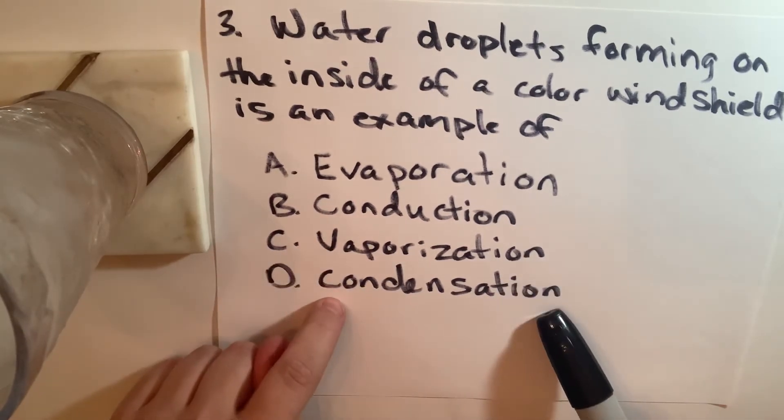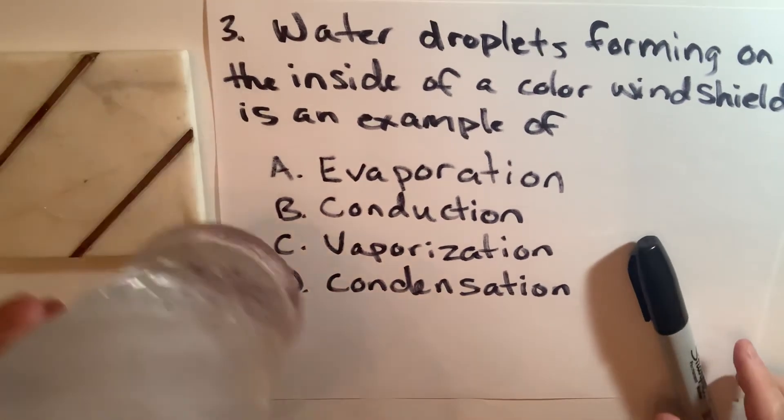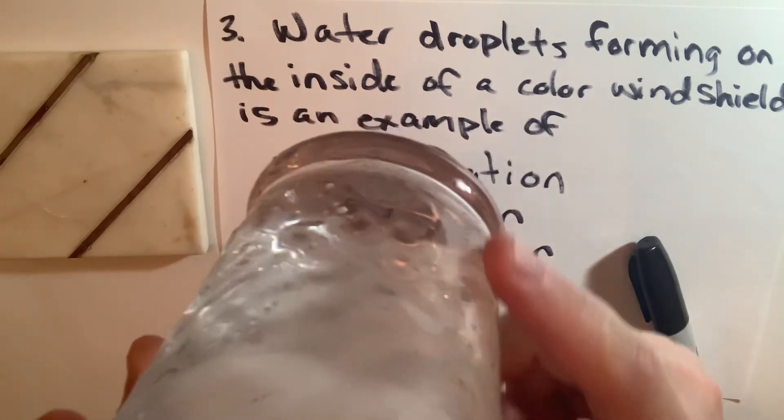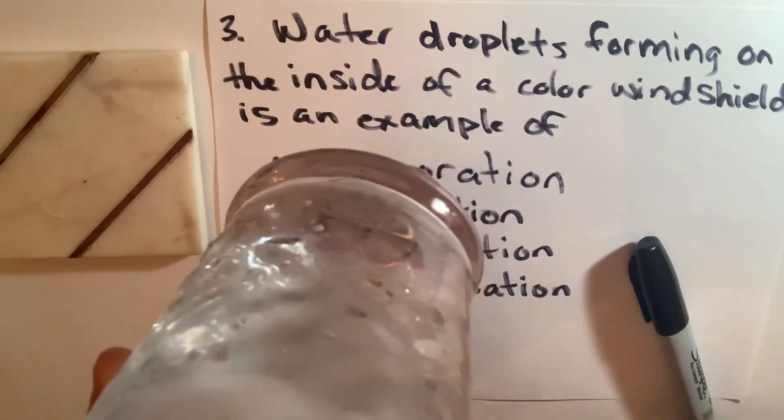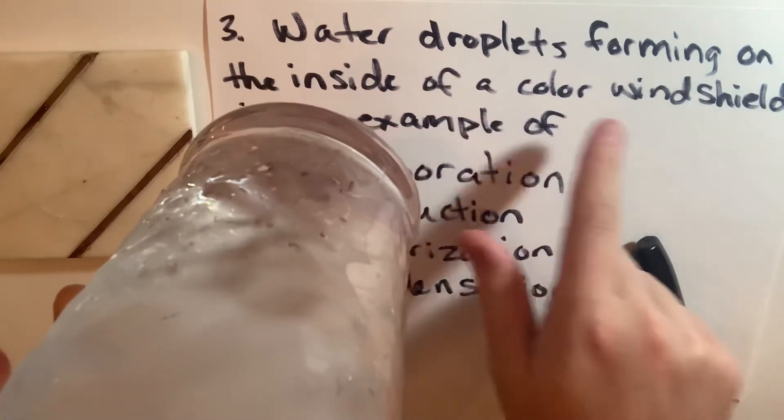Last, we have condensation. Condensation, if you've ever had a cold glass of water on a summer day, I don't know if you can see it here, when it's wet and there's water on the outside, that is called condensation, which is the same exact thing as water droplets forming on the inside of a car windshield.